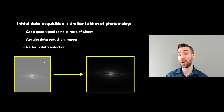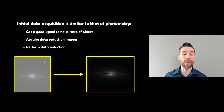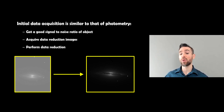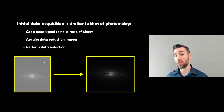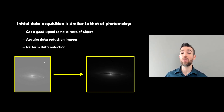Then you perform the data reduction. An example is given here: on the left-hand side you've got an image of an edge-on galaxy — that's the raw image as it came off the telescope without any processing — and then you process that to clean it up, remove artifacts, and compensate for pixel sensitivity. You get the image on the right, which obviously looks a lot better. You'd do exactly the same things as for any other astronomical image.